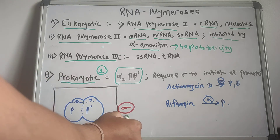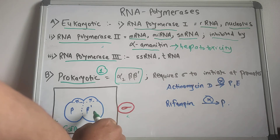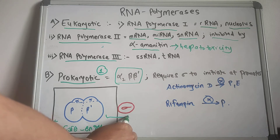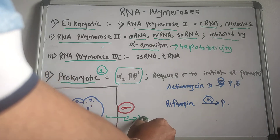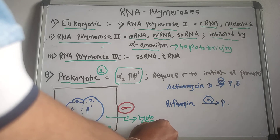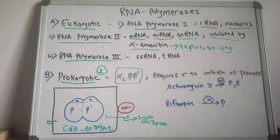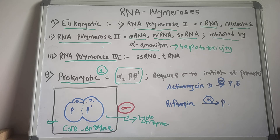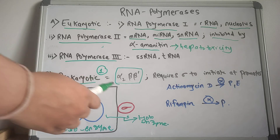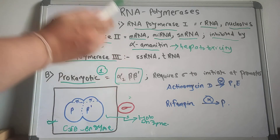The sigma factor, along with the core enzyme, forms the holoenzyme. The sigma factor is a protein required for the initiation of transcription at the promoter. It is released immediately after the initiation of transcription. Termination of transcription sometimes requires a protein called the rho factor.